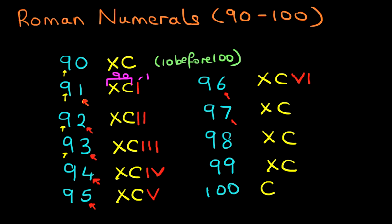What about 97? Well, 90 we've already got, which is XC. Seven is VII, so 97 is XCVII. And 98: eight is VIII, so 98 is XCVIII.